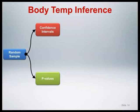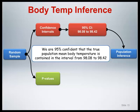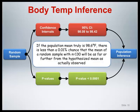Let's now summarize the results for both inferential approaches: a 95% confidence interval for the population mean body temperature, and a p-value testing the null hypothesis of a population mean of 98.6 degrees Fahrenheit. The 95% confidence interval extends from 98.08 degrees Fahrenheit to 98.42 degrees Fahrenheit. We can state that we are 95% confident that the true population mean body temperature is contained in the interval from 98.08 to 98.42 degrees Fahrenheit. The p-value is less than 0.0001, meaning there is less than a 0.01% chance that a random sample of n = 130 would differ from the hypothesized mean as much as actually observed.